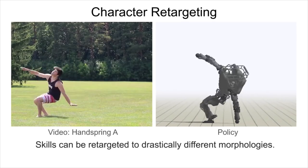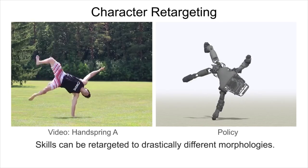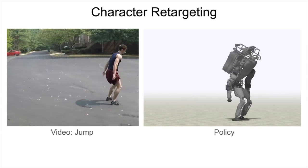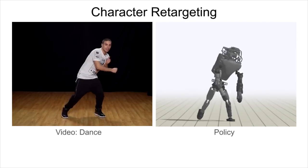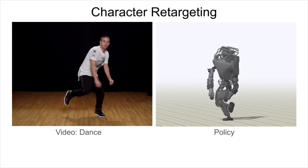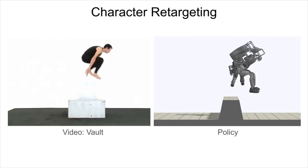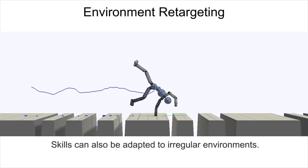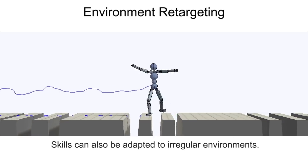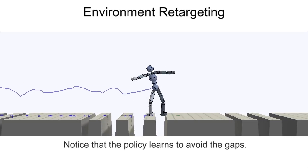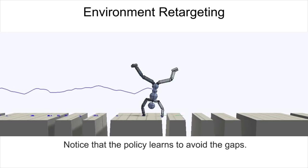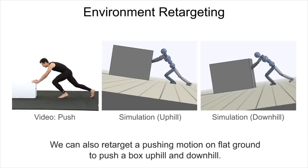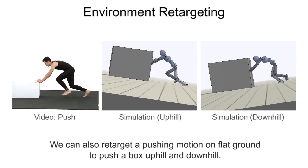Skills can be retargeted to drastically different morphologies. Skills can also be adapted to irregular environments. Notice that the policy learns to avoid the gaps. We can also retarget a pushing motion on flat ground to push a box uphill and downhill.